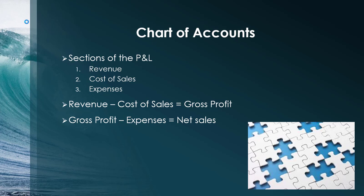On the revenue side, this is where all your sales will go. On the cost of sales, these are the direct costs incurred with producing the sales, such as signs you purchased for your listings. For expenses, this is all the other costs associated with running the business as a whole, such as web hosting fees. Revenue minus cost of sales equals gross profit, and gross profit minus expenses equals net income.